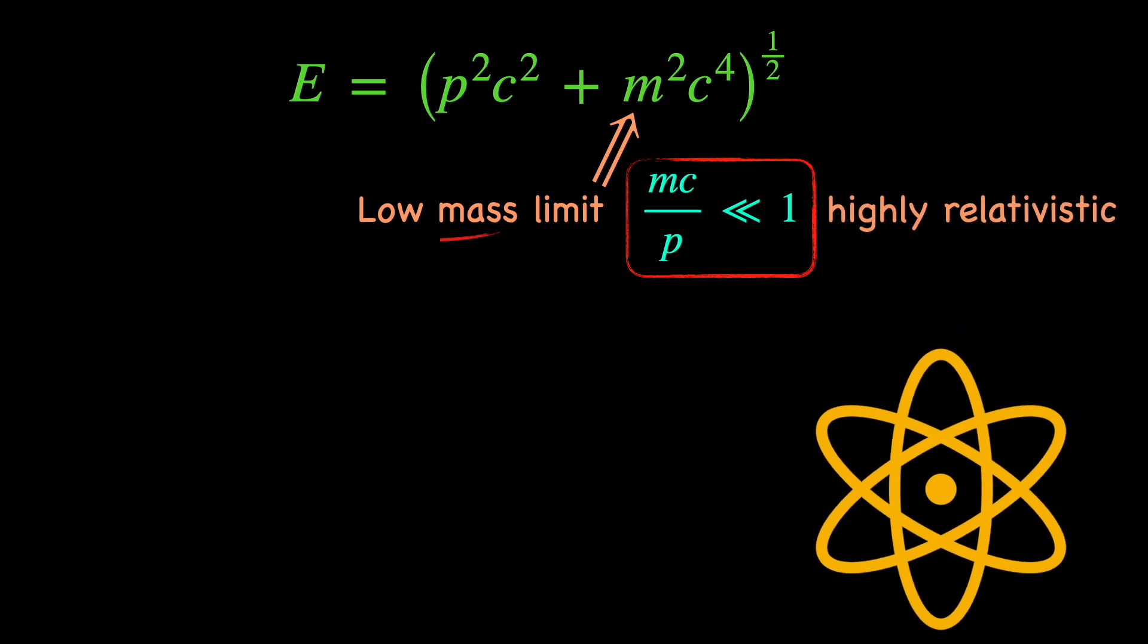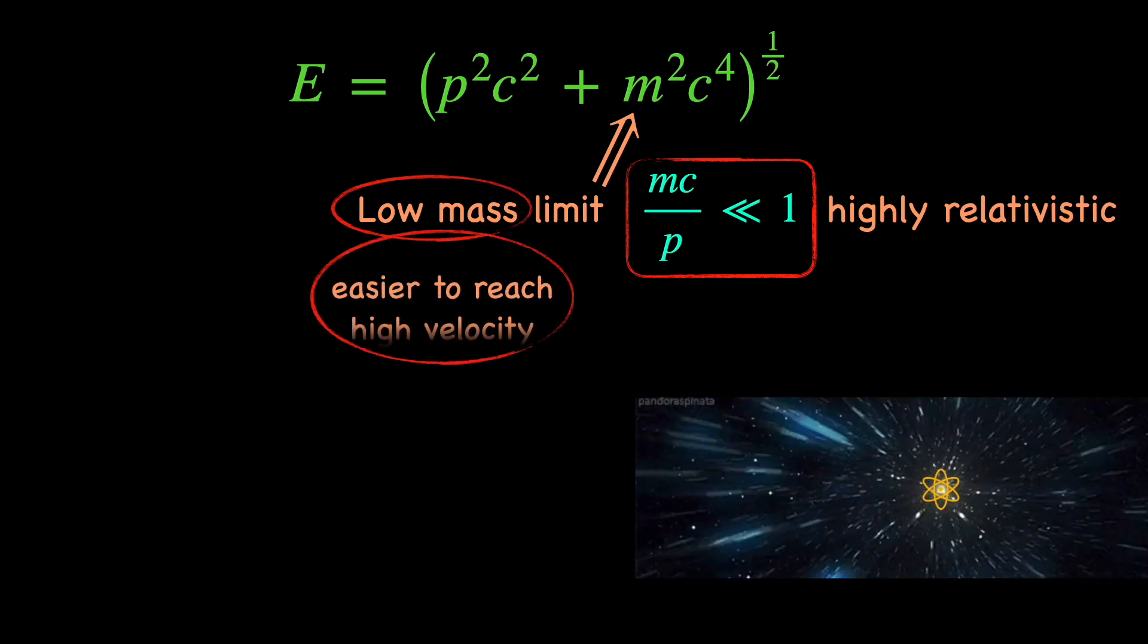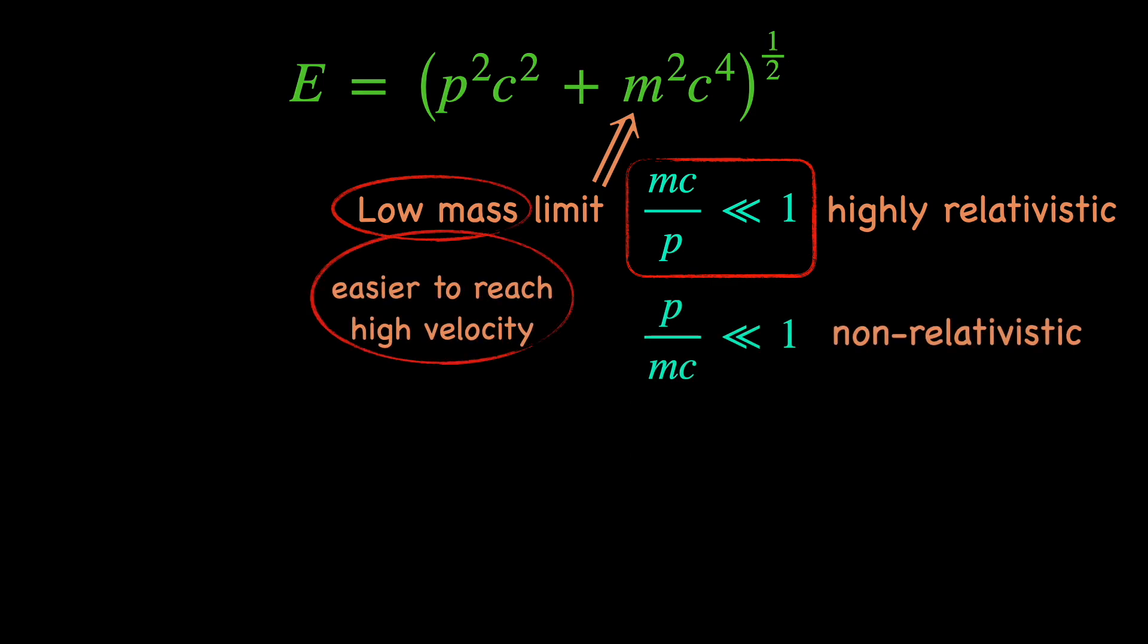Actually, with lower mass, it is easier for the particle to go to a higher velocity and behave relativistically. Here is what really happens to the p by mc ratio with lower masses.